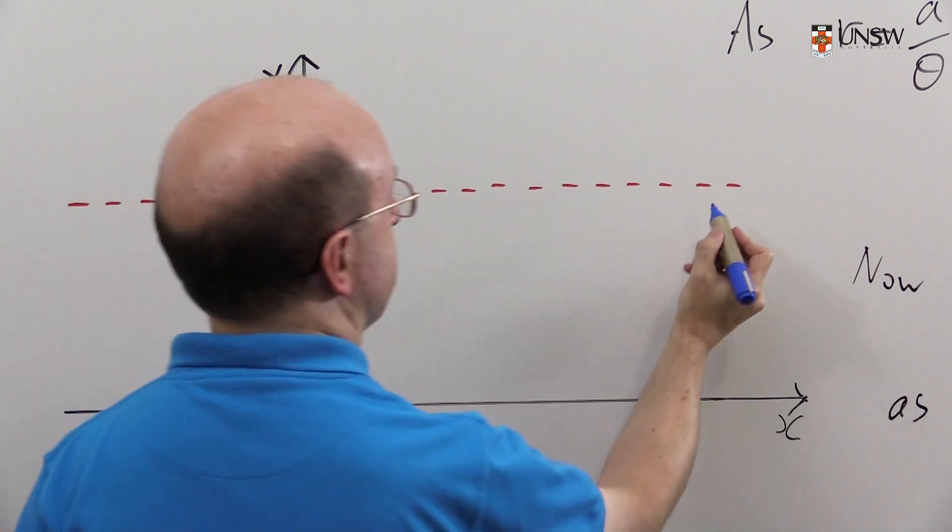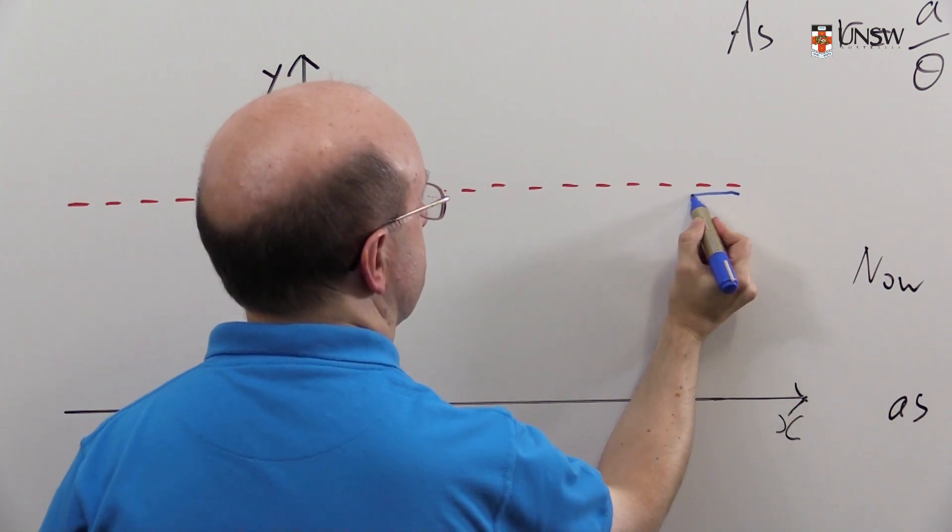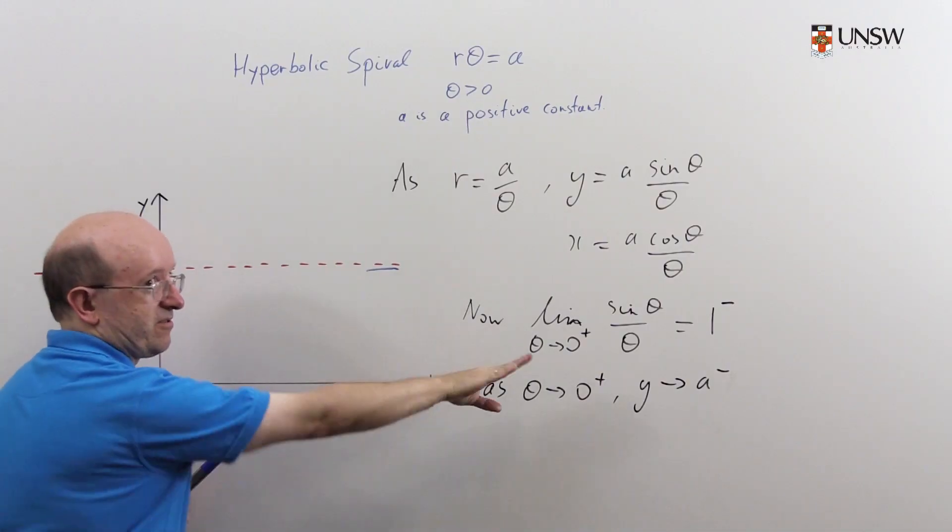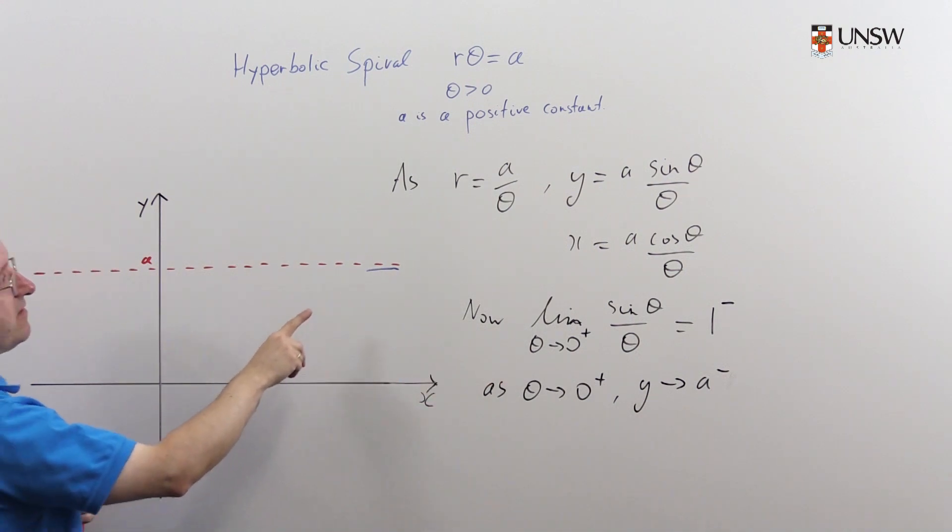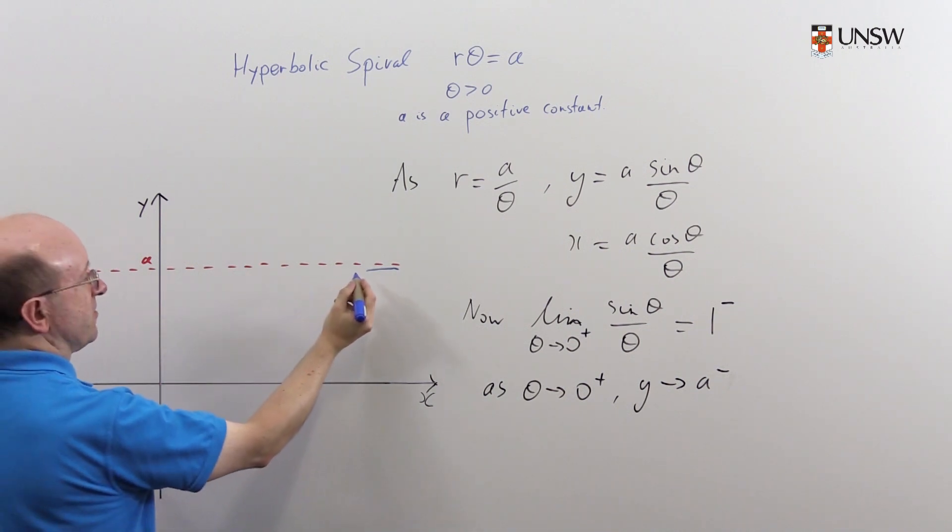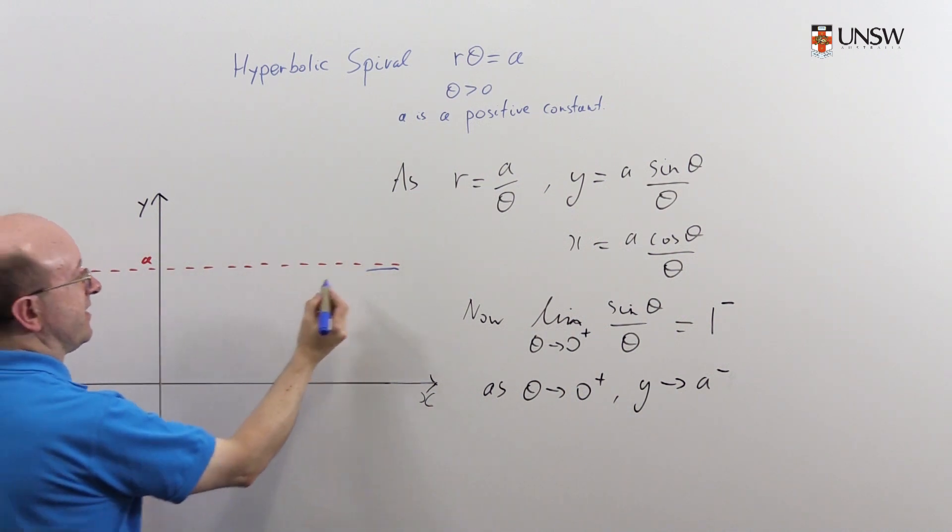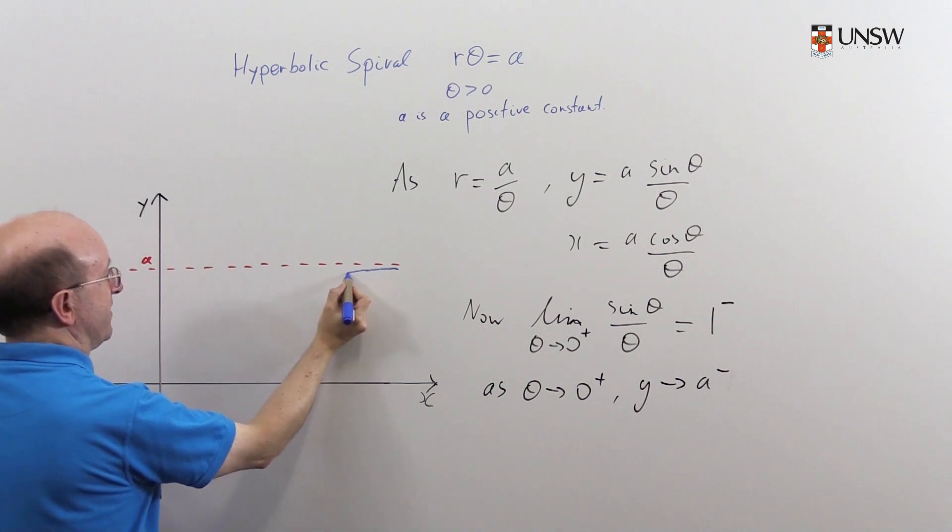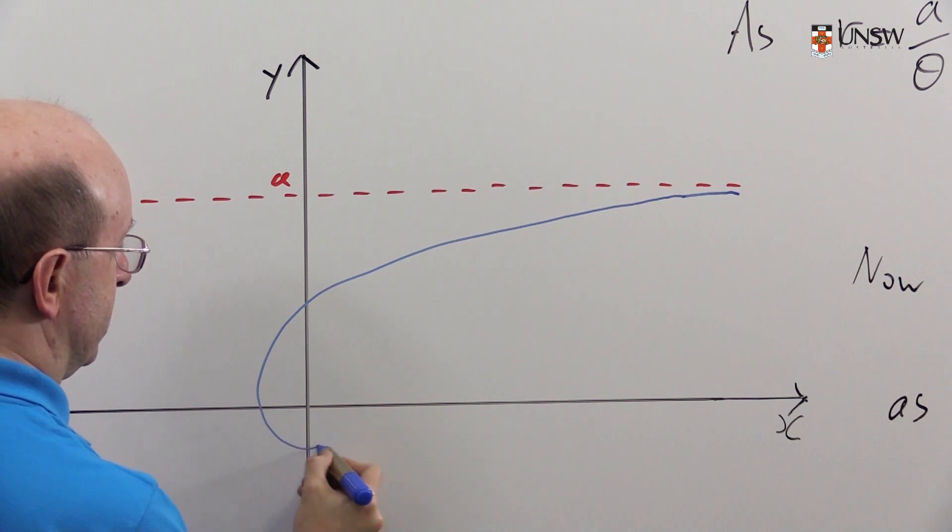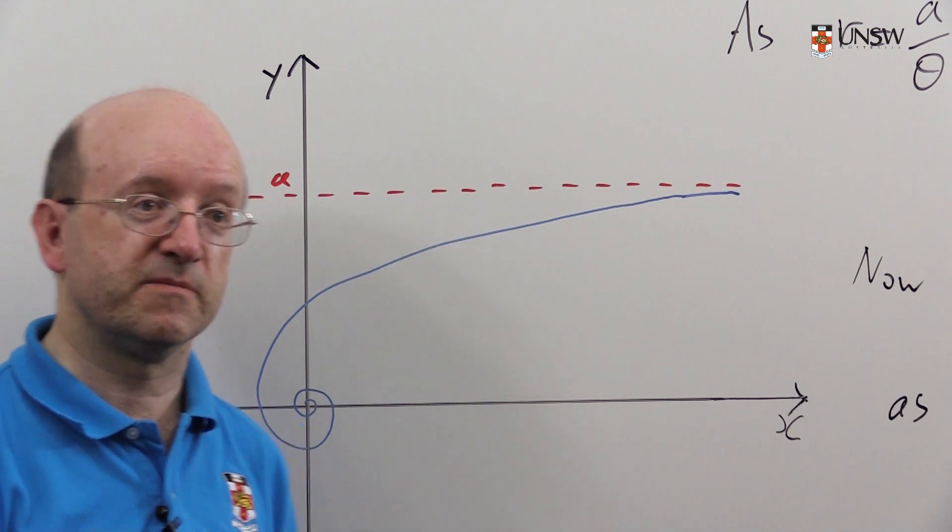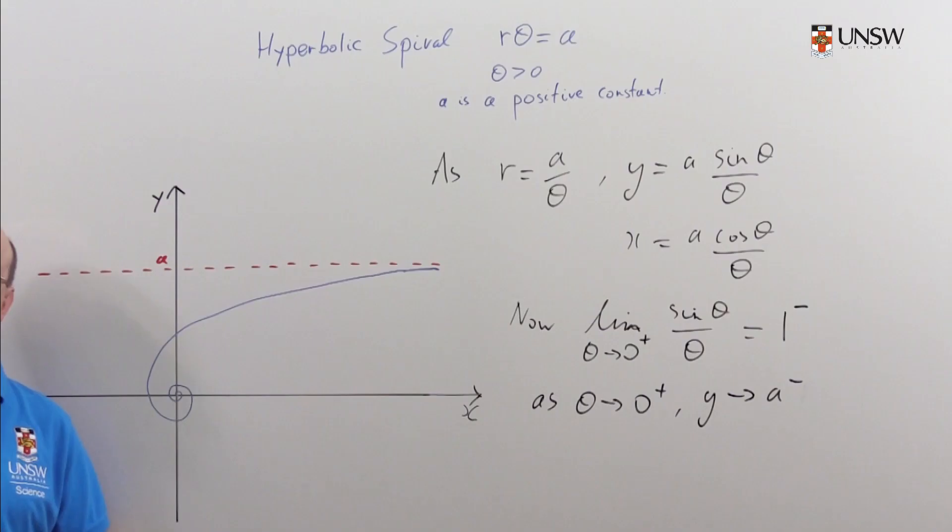This is the next part of the question: sketch the curve. So we're down here, and as theta increases from zero—notice that's x tending to infinity so we are out that way—as theta gets larger, the curve we're rotating round in an anti-clockwise direction, so the curve will come in this way because r will get smaller. R is a over theta, so we'll get a curve that spirals round and goes in tighter and tighter towards the origin as theta tends to infinity. And that is the hyperbolic spiral.